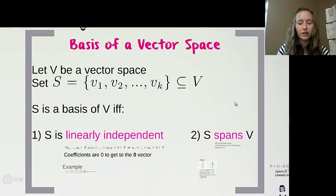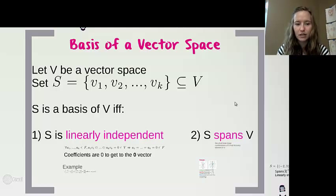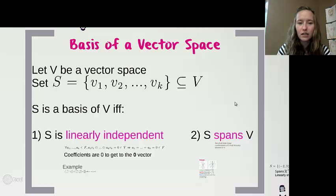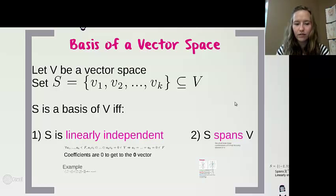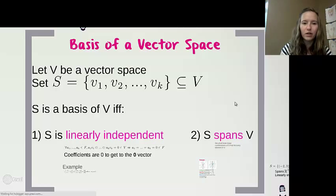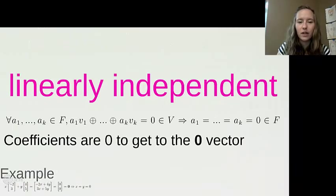Now that we've covered linear combination, we can talk about the basis of a vector space. Let V be a vector space and S be a subset of V. S is a basis of V if and only if S is linearly independent and S spans V. Now we'll look more specifically at what linearly independent and spanning mean.